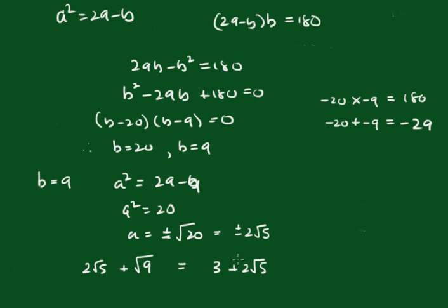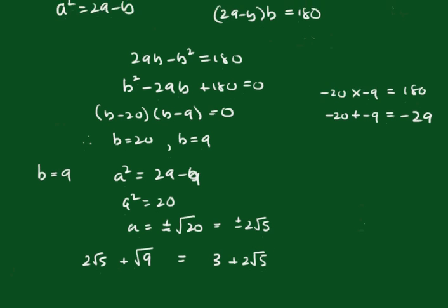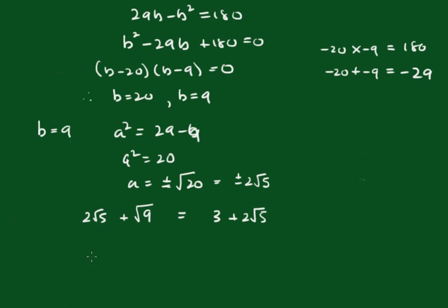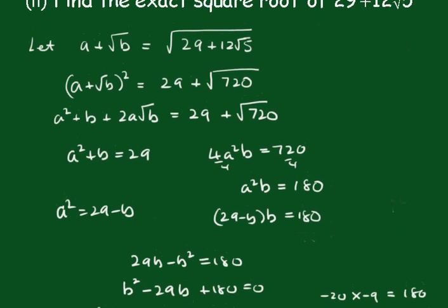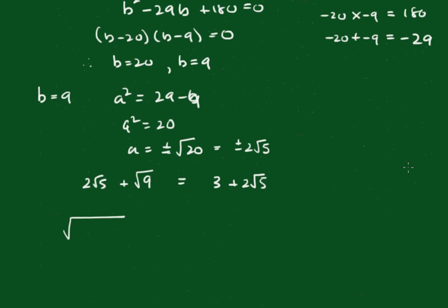The negative case would give a negative result, and since you need a positive square root, that confirms it. The final answer is that the square root of 29 plus 12 root 5 is equal to 3 plus 2 root 5.